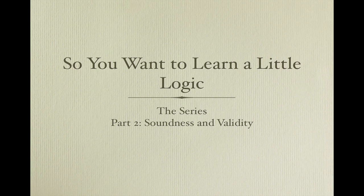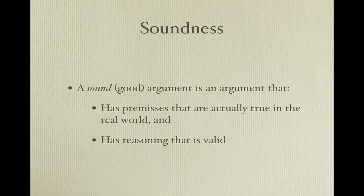In Part 1 of this series, we described an argument as a form of discourse with some premises and a conclusion. The question inevitably arises: what makes a good argument different from a bad argument? Logic has a very firm answer to this question. A good argument is one that: 1. has premises that are actually true in the real world, and 2. has reasoning that is valid. That's it. And any argument that does not meet these two criteria is a bad argument.